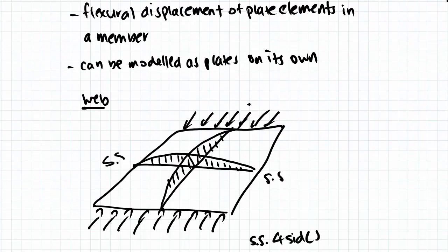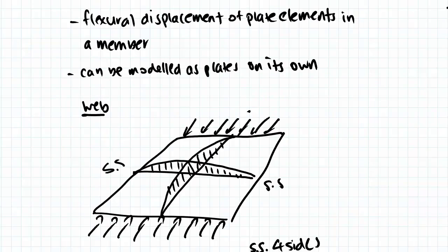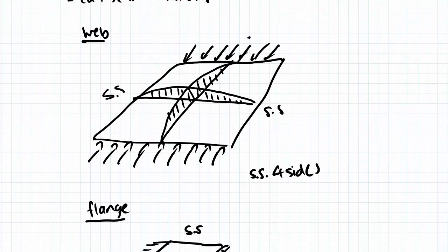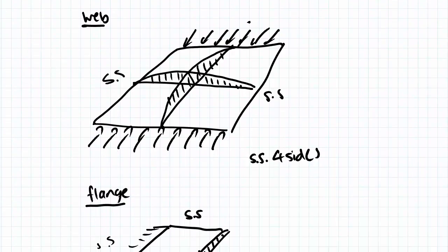Now we can model local buckling as plates on its own. So for an I-beam, that would be the web and the flange. In a web, we actually modeled all the edges as simply supported. So if you can imagine that this is the I-beam resting, these two sides are simply supported because they're connected to the flange, and these two sides are also simply supported as they're also connected to the rest of the web.